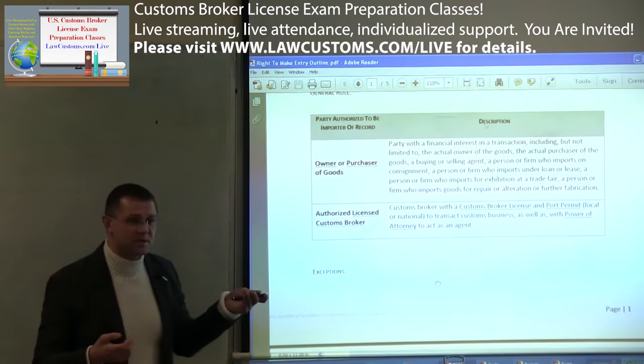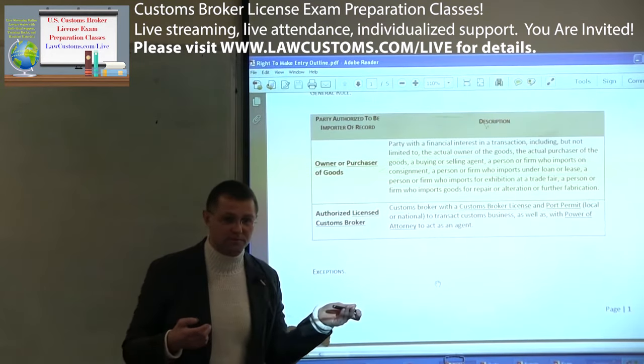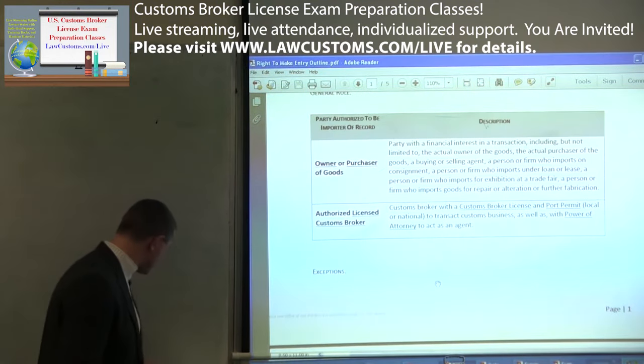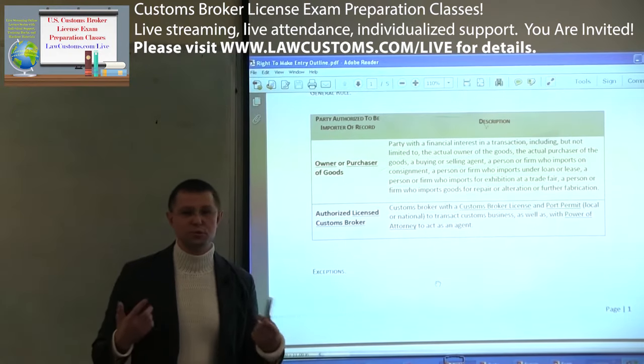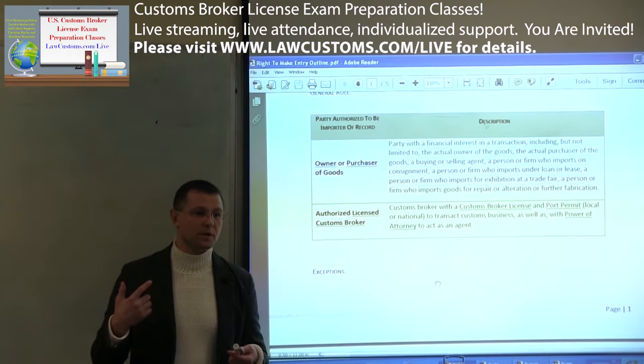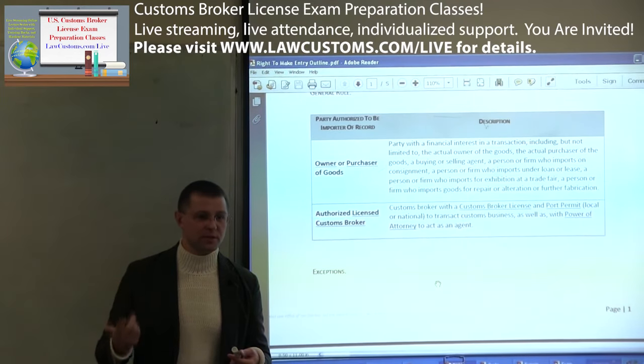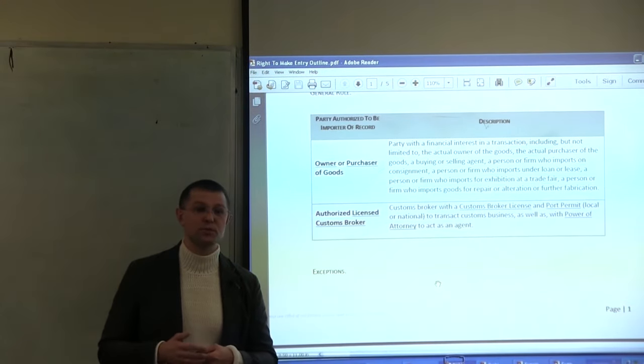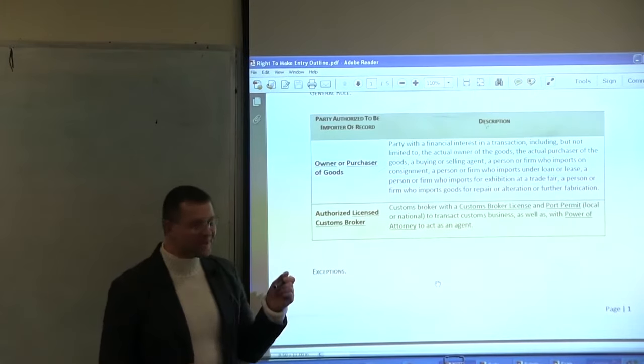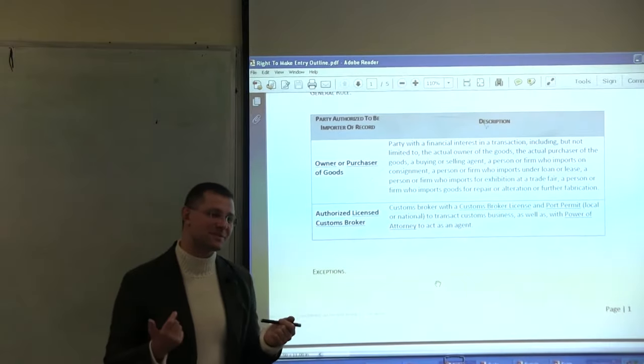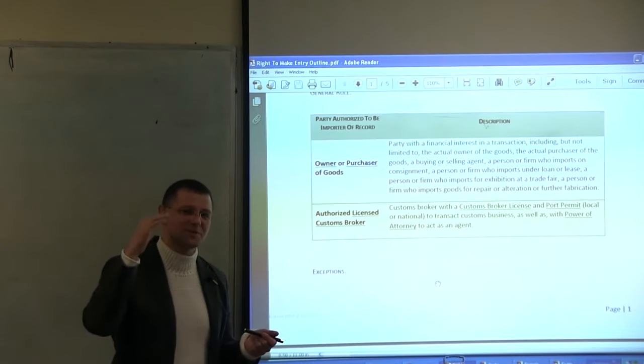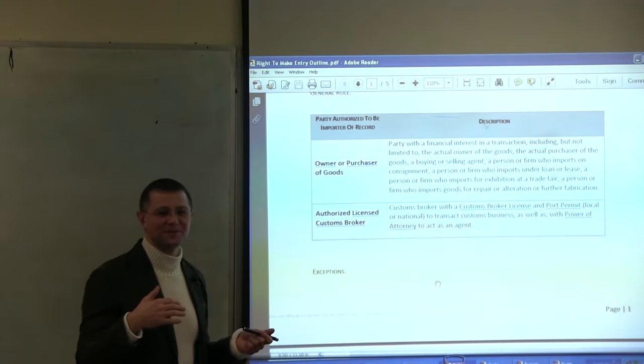Next, the second part is authorized licensed customs broker. We already discussed that to have a license you need to pass the exam, you need to have good moral character, pass a background check, be a United States citizen, not work for the U.S. government, and be 21 years of age or more. So we know what the license is required - you have to have that criteria: citizenship requirement, age requirement, and passing the customs broker exam.